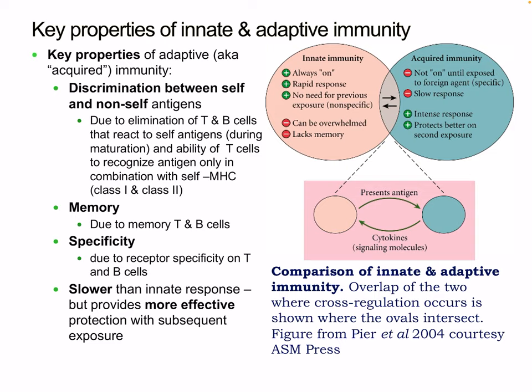A final summary: the key properties of adaptive immunity include discrimination between self and non-self antigens, due to the elimination of T and B cells that react to self-antigens during maturation and the ability of T cells to recognize antigen only in combination with self-MHC class 1 and 2. Adaptive immunity also has memory, is specific due to the receptor specificity of T and B cells, and while slower than innate, provides more effective protection upon subsequent exposure. Thank you, and we'll see you in the next lecture.